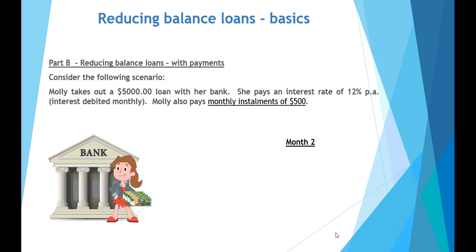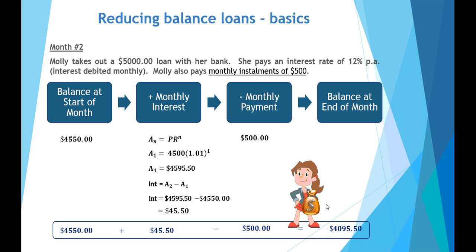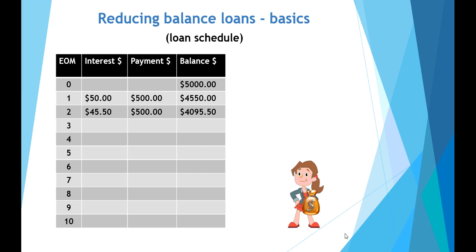In the second month, Molly again makes a payment of $500. The end of the previous month is the start of this month with a debt of $4,550. We multiply that by the growth factor of 1.01 and find that interest raises the amount owing from $4,550 to $4,595.50, giving interest of $45.50. After Molly's $500 payment, her balance at the end of the second month is reduced further to $4,095.50.